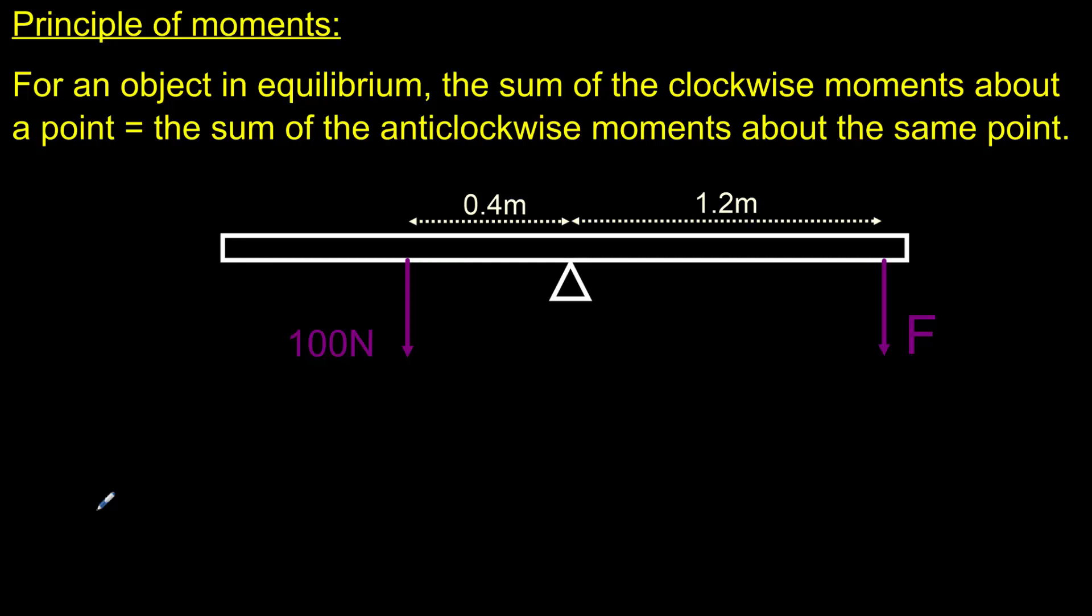Let's begin with a relatively simple example of this, with a seesaw that is balanced, that is, it is in equilibrium. The first thing we need to do with any situation like this is decide where we are going to take moments around. In this particular diagram, that should be obvious. We have a pivot in the middle, and we'll take moments around that point.